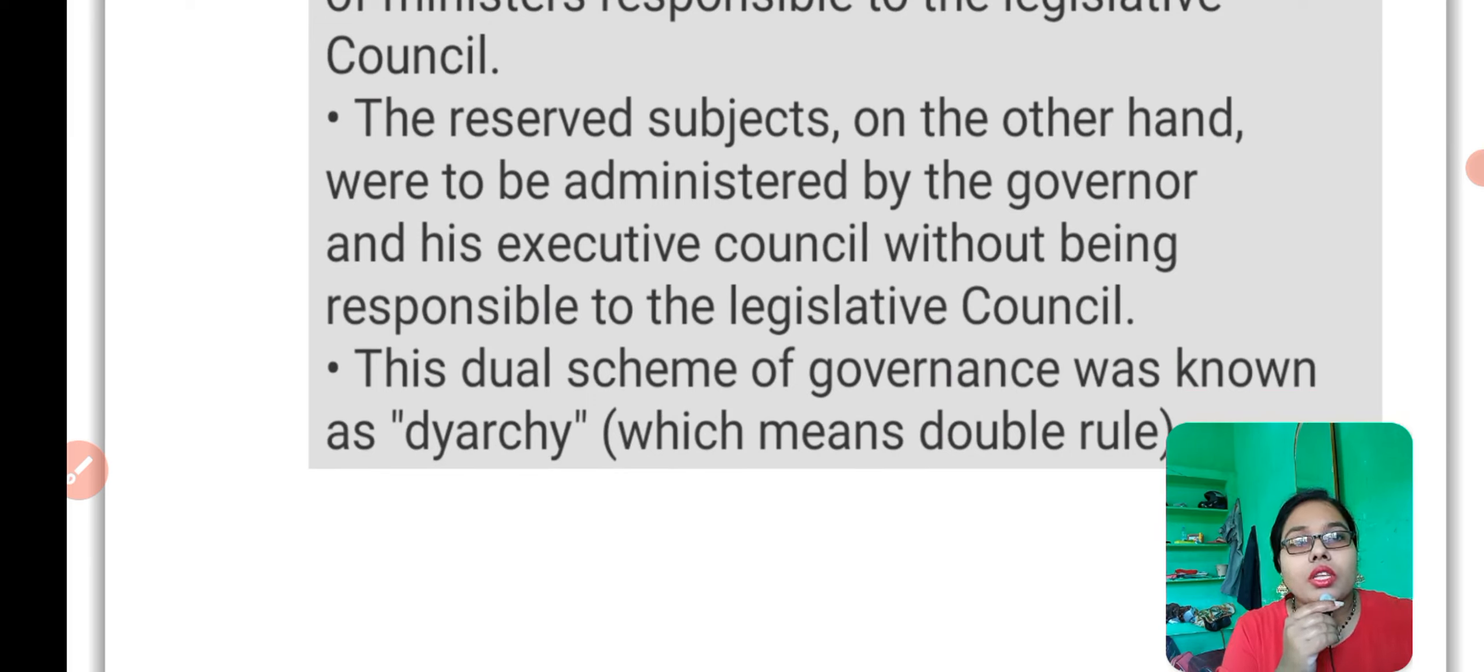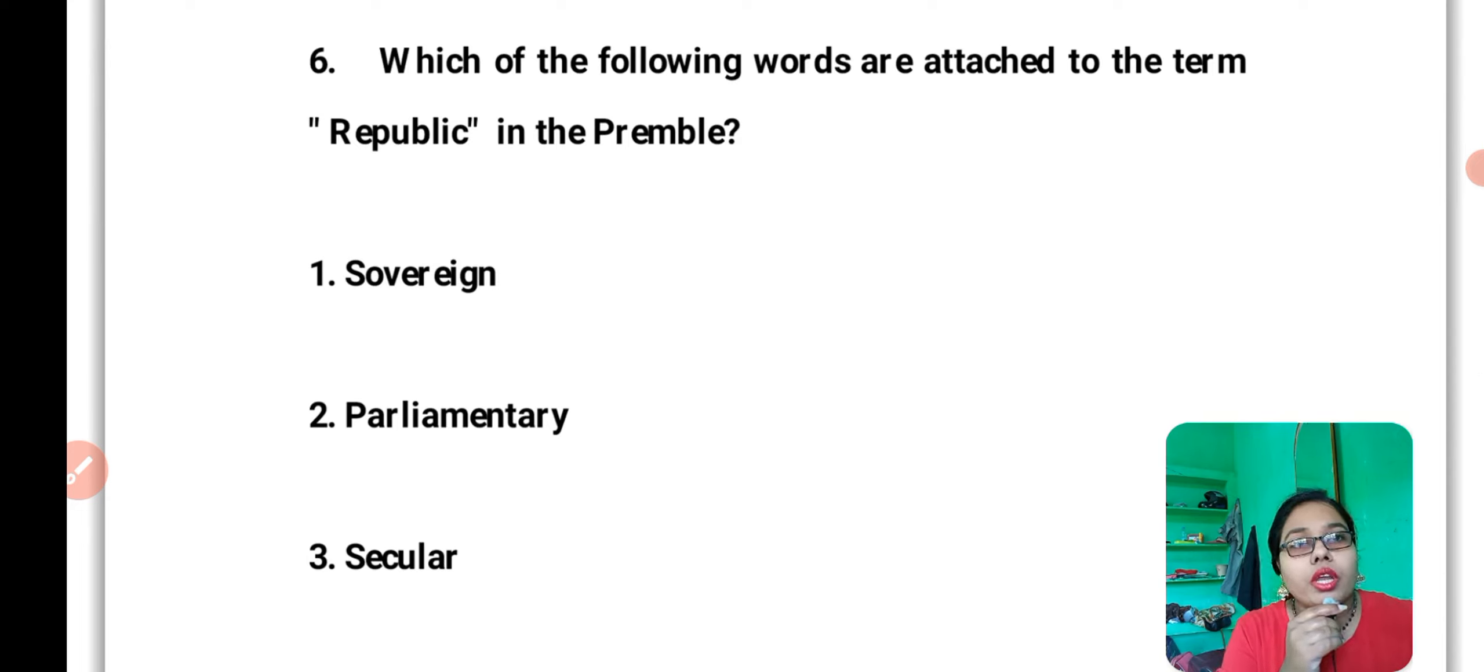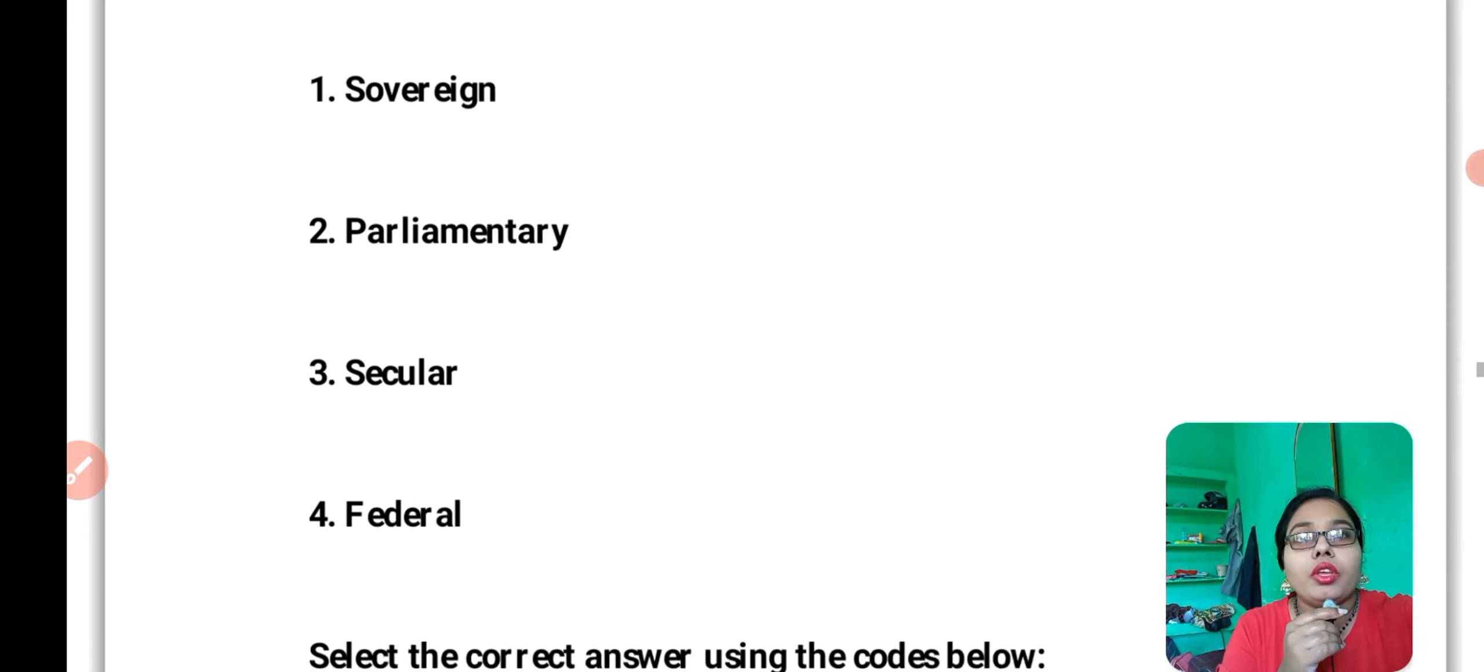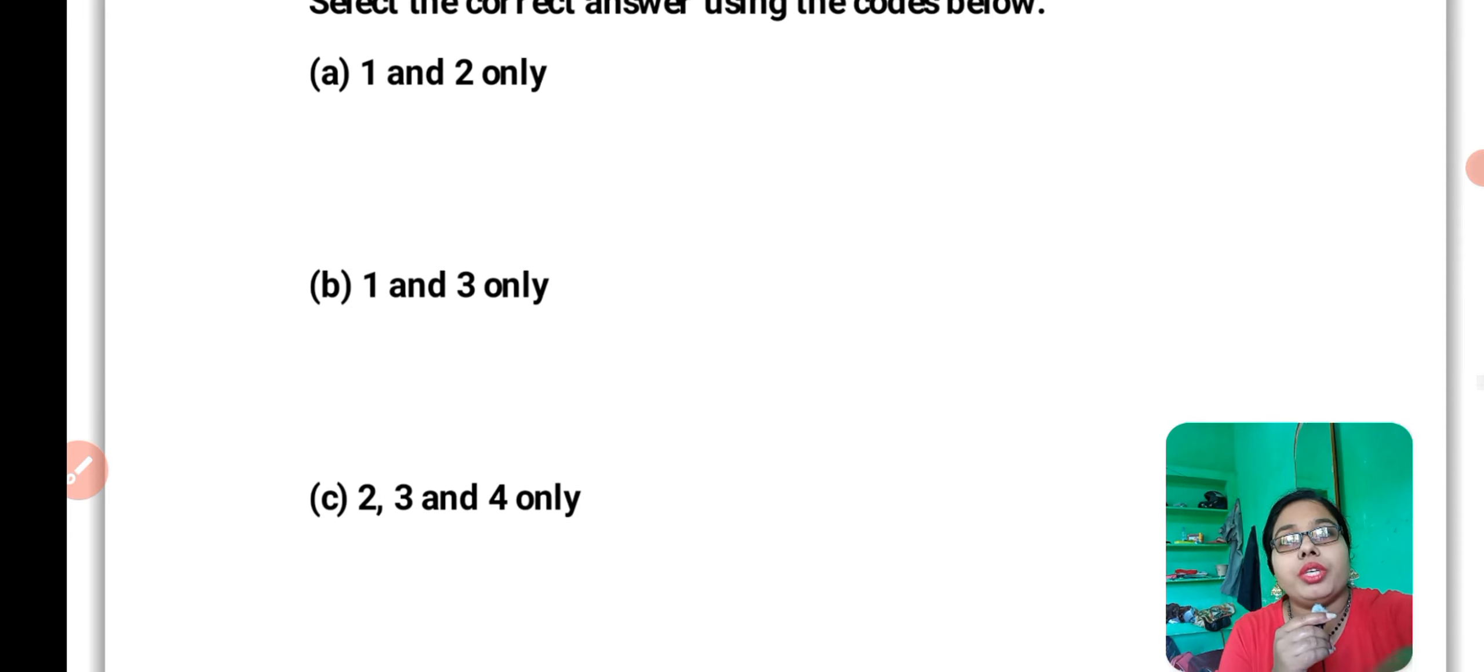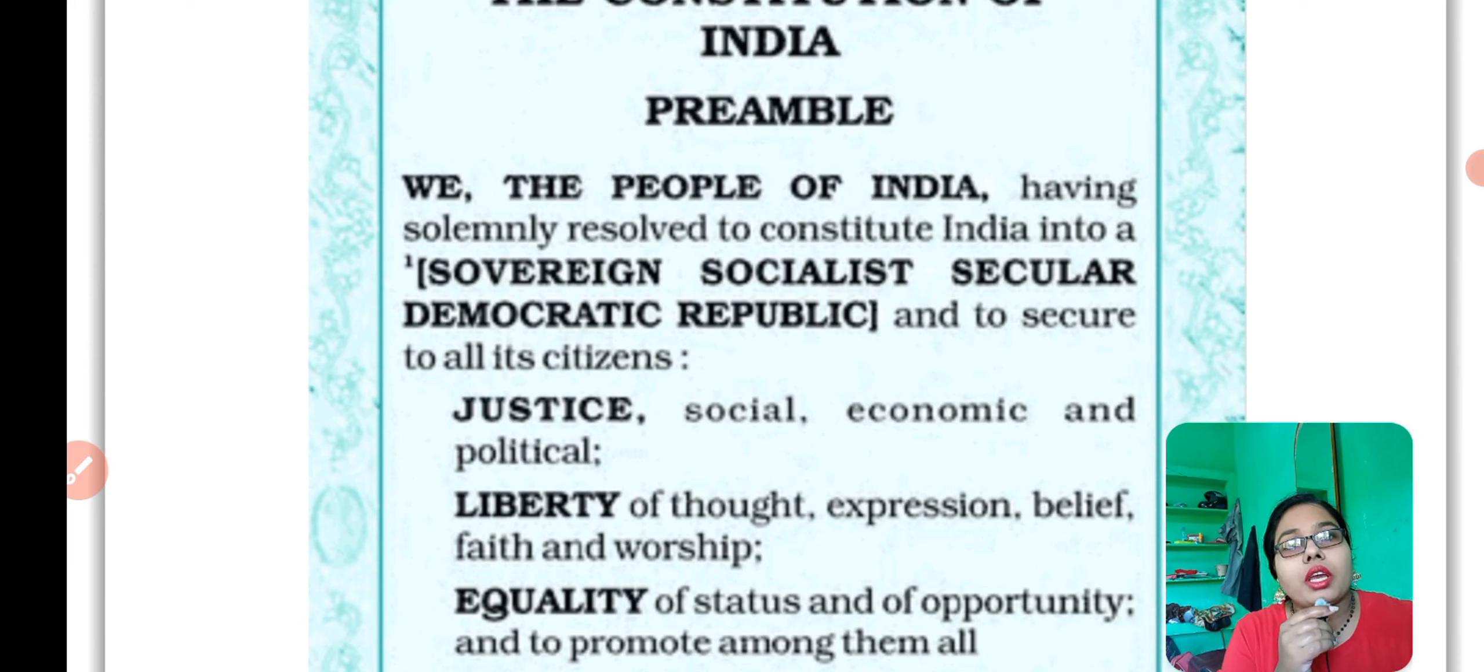Question number 6: Which of the following words are attached to the term Republic in the Preamble? The options are sovereign, parliamentary, secular, and federal. The correct answer is 1 and 3 - sovereign and secular. The Preamble to the Constitution of India states: We the people of India having solemnly resolved to constitute India into a sovereign, socialist, secular, democratic republic.